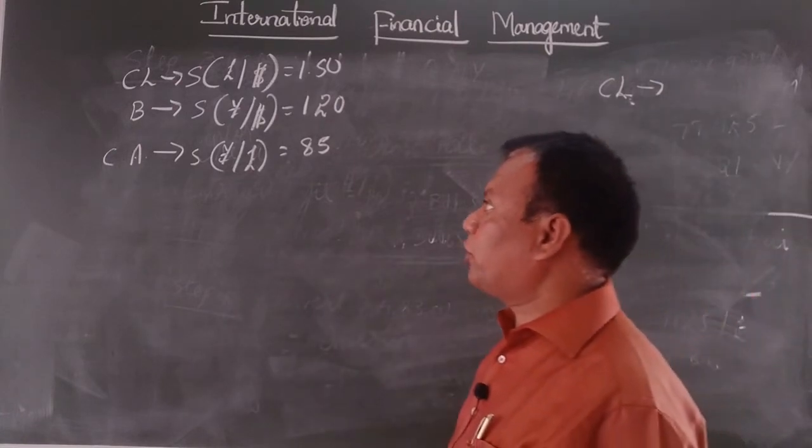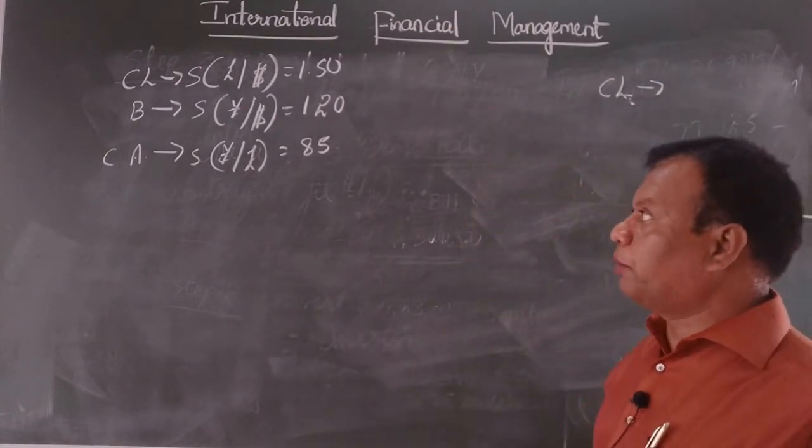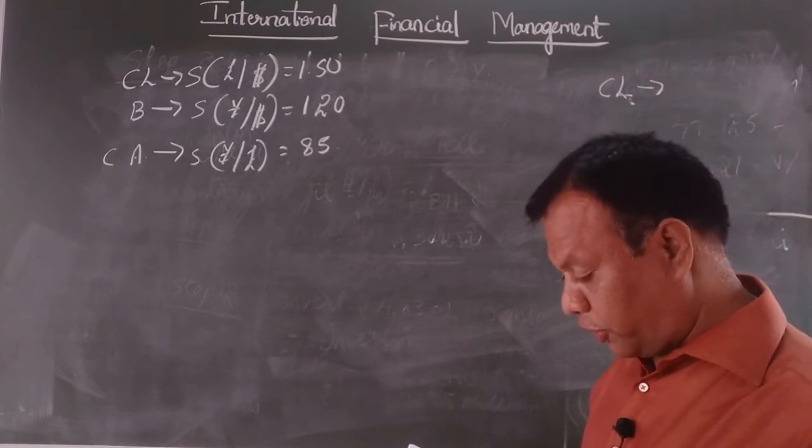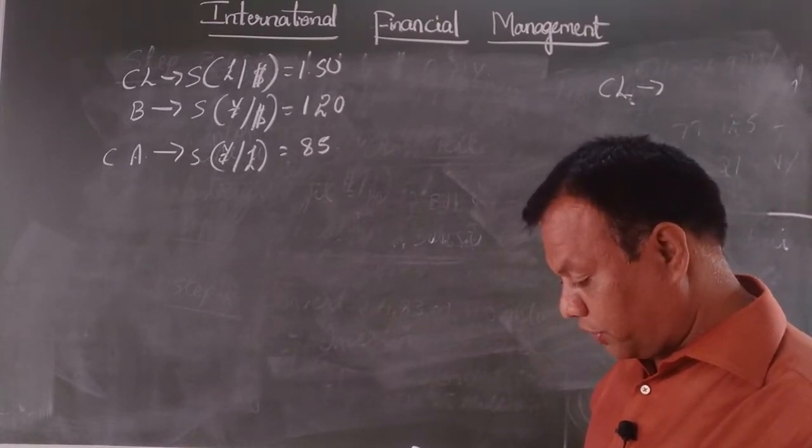In case of Barclays, spot rate of yen by pound is 1.20, whereas in case of Credit Agricole, spot rate of yen by pound is 85.